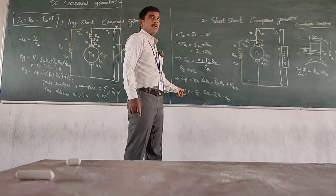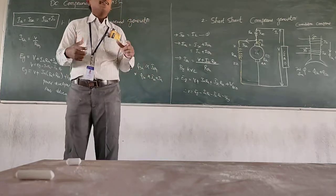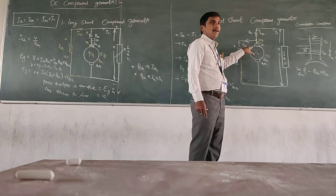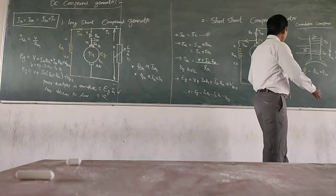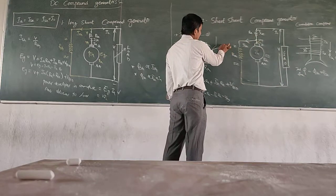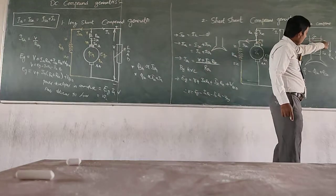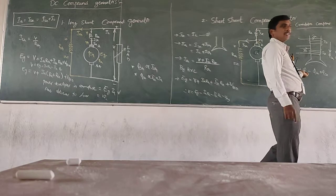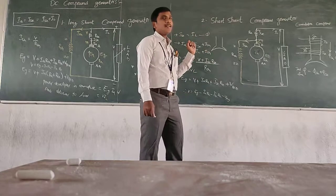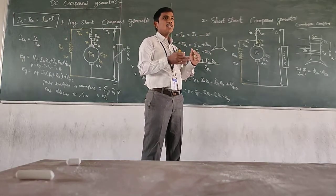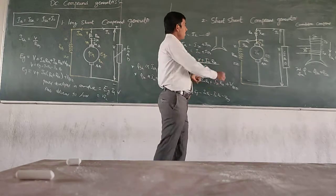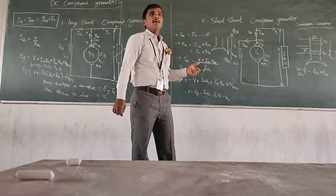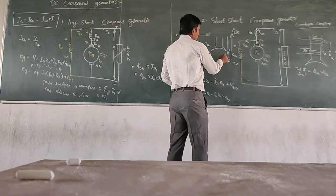Now, not only are compound generators classified as long shunt and short shunt — according to the interaction of shunt field winding and series field winding, there are further types. There are only two field windings in the compound generator: shunt field and series field. If both field fluxes, shunt and series, are adding in nature, then it is a cumulative compound generator. If they are in the same direction, it is cumulative compound.